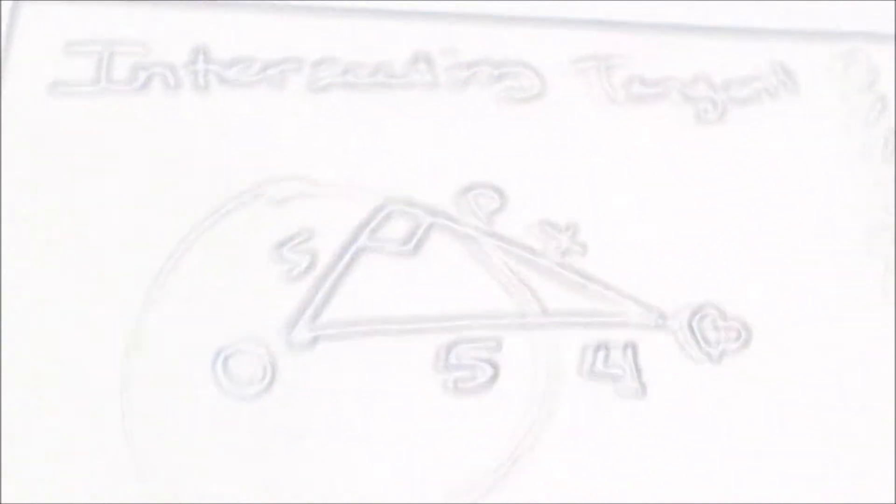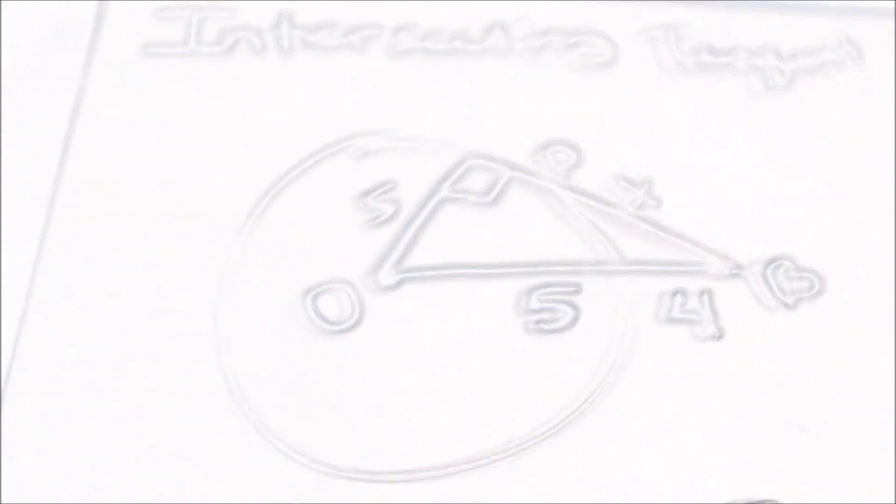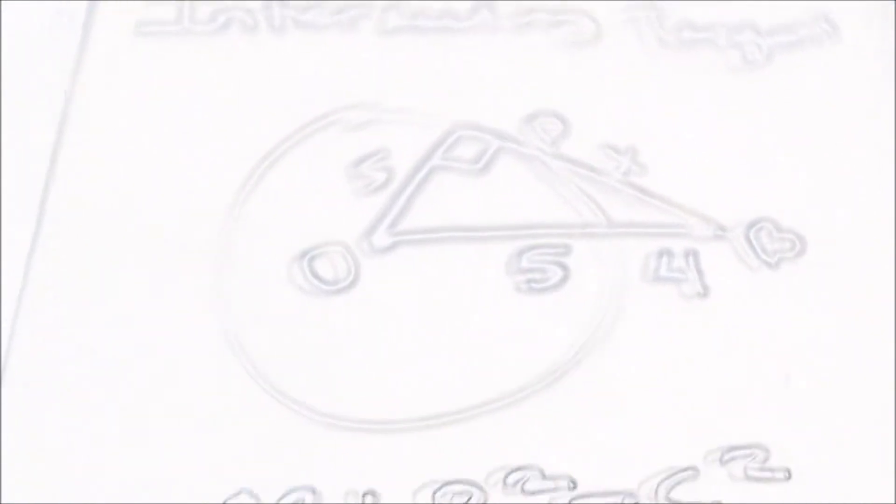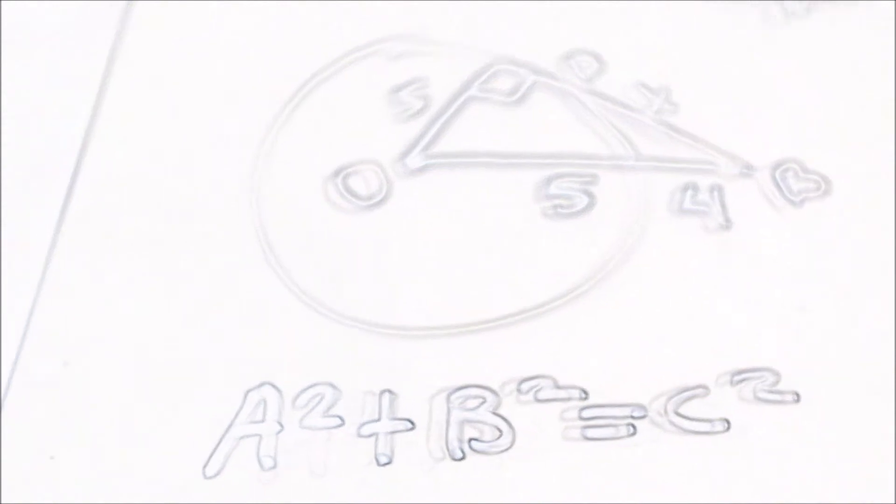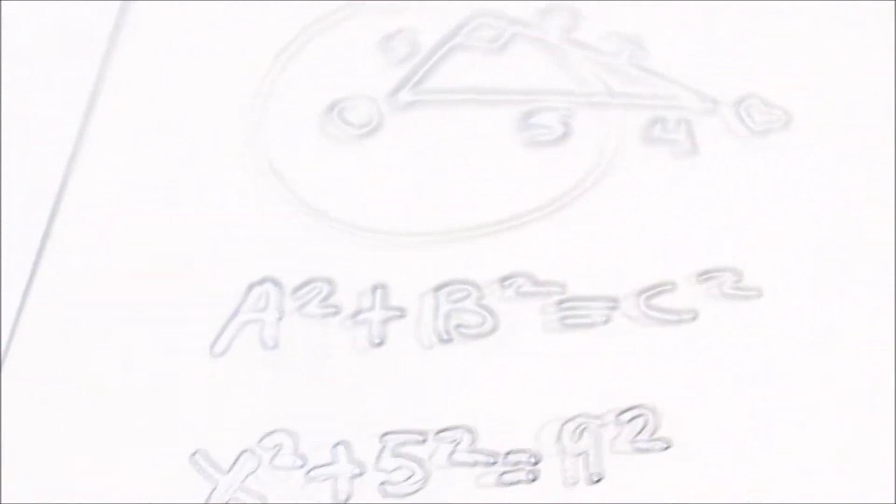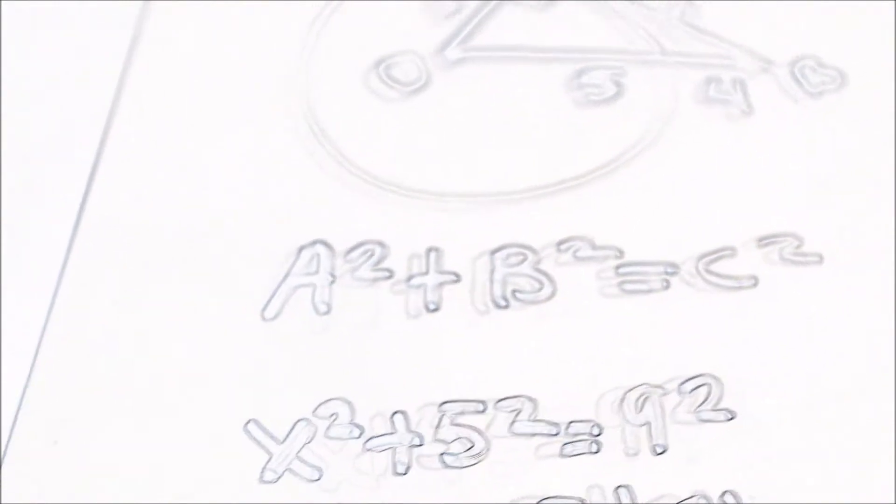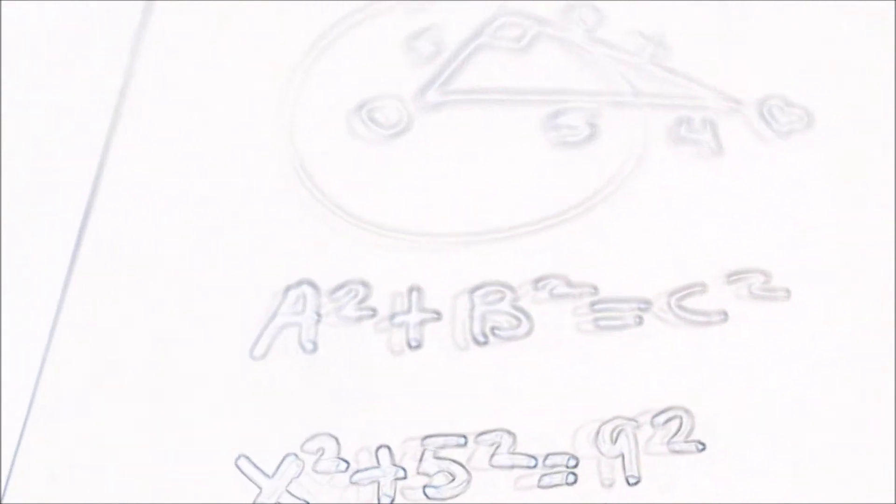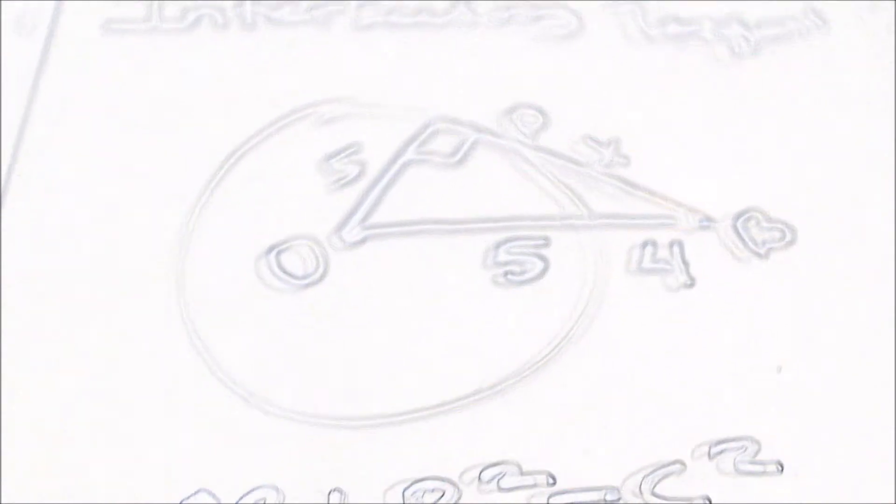Another example is intersecting tangent. Here's a diagram. To solve this diagram, you must use A squared plus B squared equals C squared. So it would be X squared plus 5 squared equals 9 squared. You get the 9 squared from adding 5 and 4 together.